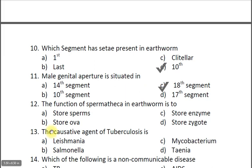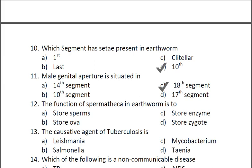Question twelve: The function of spermathecae in earthworm is to — A store sperms, B store ova, C store enzymes, D store zygote. The correct answer is A, store sperms. There is storage of sperms and also fertilization takes place in the spermathecae of the earthworm.